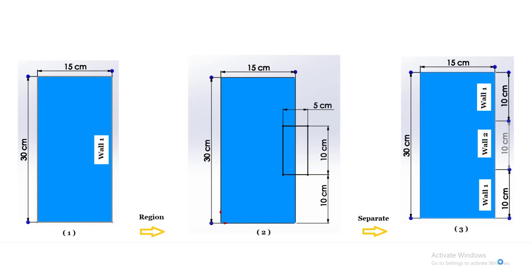Hi guys, in this video I'm going to show how you can use a useful tool in ANSYS Fluent. As you know, it is difficult to separate a boundary condition inside ANSYS Fluent into multiple walls. For example, you have a wall boundary condition that has been imported from your meshing software, and to divide this boundary condition into two different walls and set different conditions to them separately, you must go back to your geometry modeler and then mesh it again.